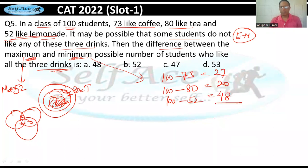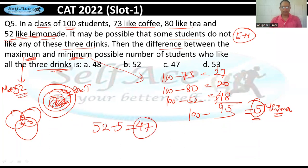Ab inka jo total hai use 100 se minus kar dijiye, wo minima hota hai. Aisa kyun hota hai that we have already explained in classes, but yahan par main is question ko karne par focus kar raha hoon. 73, 15, 195, so 100 mein se 95 ko minus kar dijiye. Five is minimum. Maximum 52, so the difference is 52-5 which is 47. That should be your answer, which is option C.